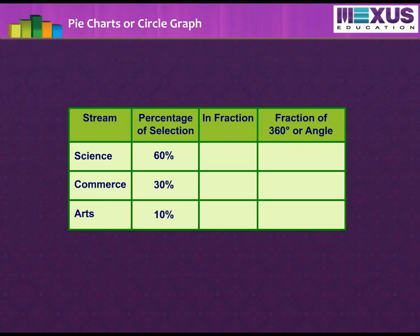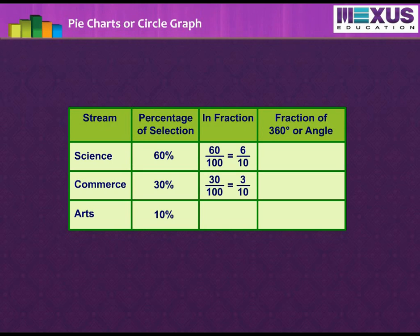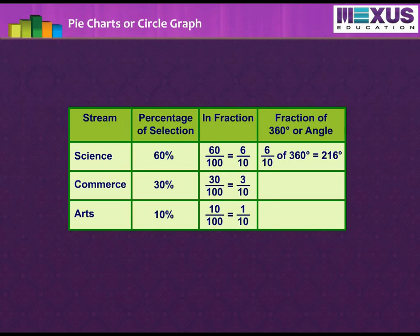We know that a complete circle has a central angle of 360 degrees. Accordingly, we need to find the angle by making a table. First, calculate the fraction by dividing the percentage by 100, and we get the values as follows. Now, to obtain the angle, multiply the fractions obtained by 360 degrees, and we get the results as follows.